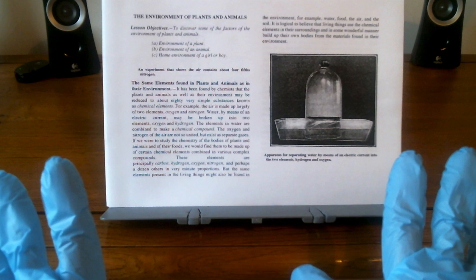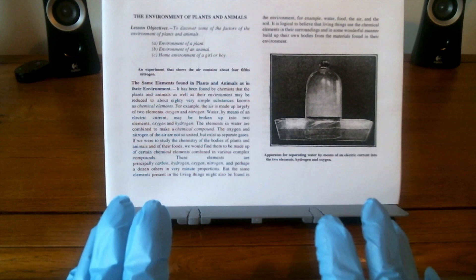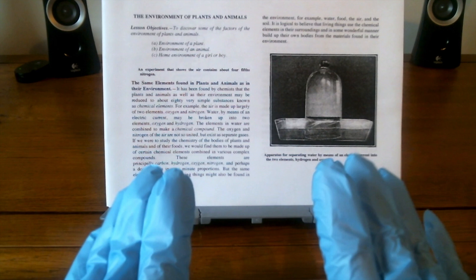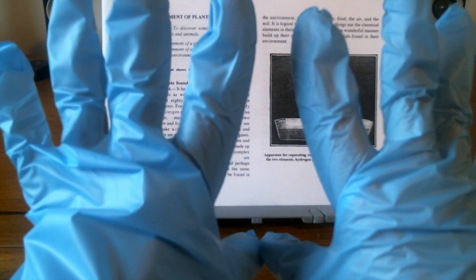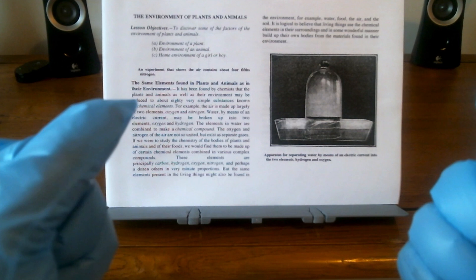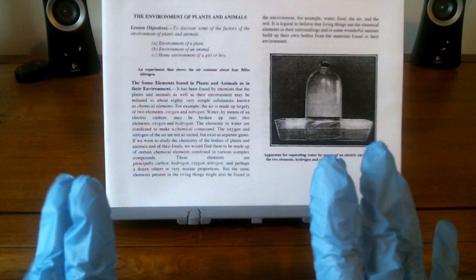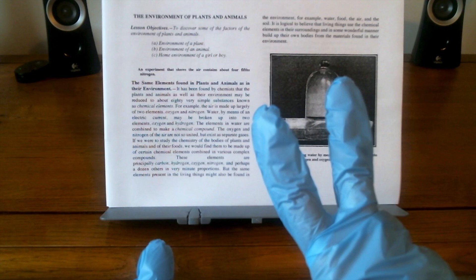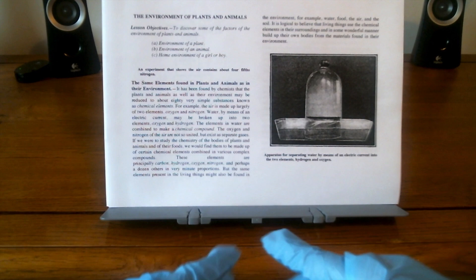Our first subject: the same elements found in plants and animals as in their environment. It has been found by chemists that plants and animals, as well as their environment, may be reduced to about 80 very simple substances known as chemical elements. For example, the air is made up largely of two elements, oxygen and nitrogen. Water, by means of an electric current, may be broken up into two elements, which are oxygen and hydrogen.